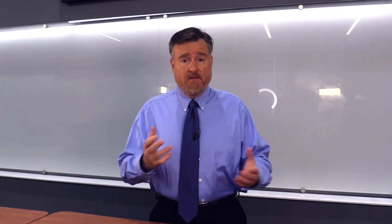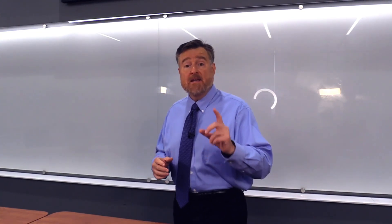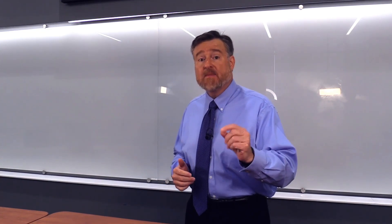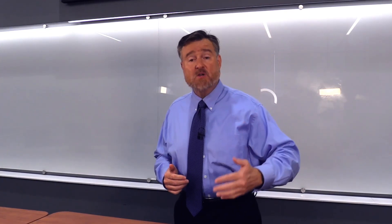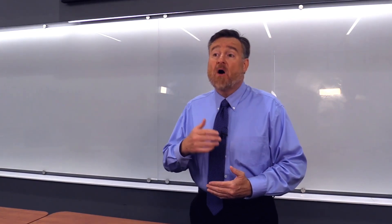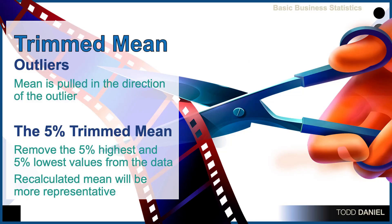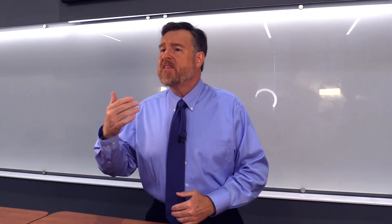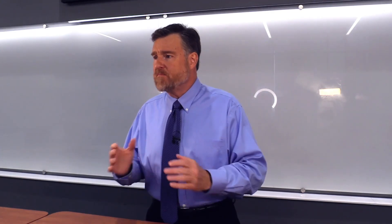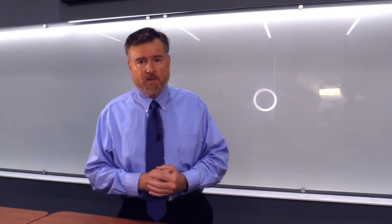What I did, therefore, was to report not only the mathematical mean — add up all the scores, divide by n — but also the trimmed mean. I trimmed off the upper and lower five percent of the distribution and reported that mean as well. This gave us a much clearer and honest picture of the typical number of hours being volunteered within this group.